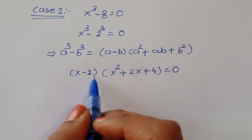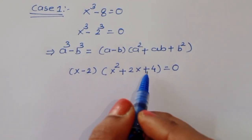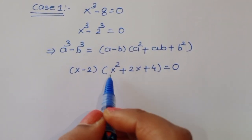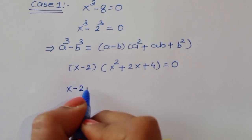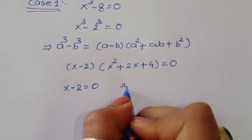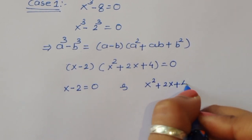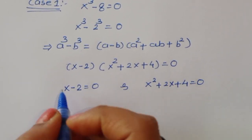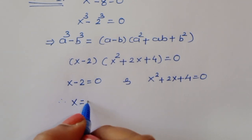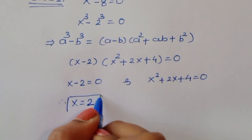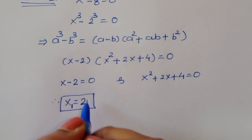Now x minus 2 times x squared plus 2x plus 4 is equal to 0. We get two equations: x minus 2 equals 0, and x squared plus 2x plus 4 equals 0. From the first, x minus 2 equals 0, therefore x is equal to 2. This is the first value, x₁ equals 2.